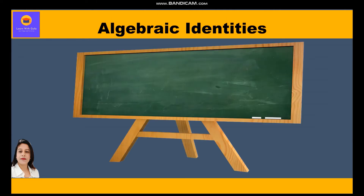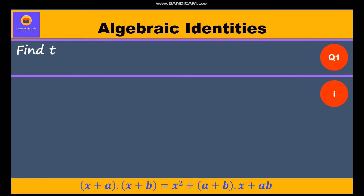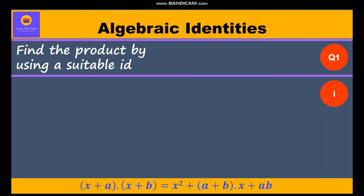Hi everyone. In this video on algebraic identities, we shall take a few questions related to Identity 5. According to Identity 5, (x + a) into (x + b) is equal to x² + (a + b) into x + ab. Let's start with the first question: (x + 5) into (x + 4).